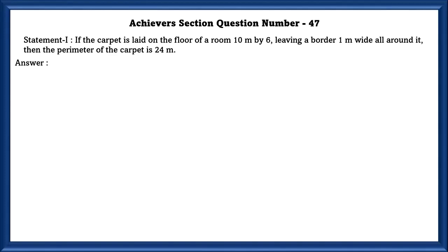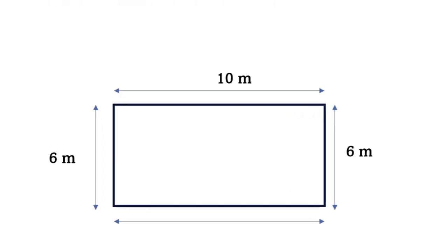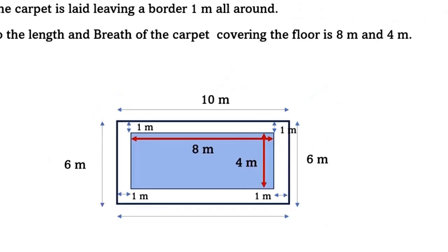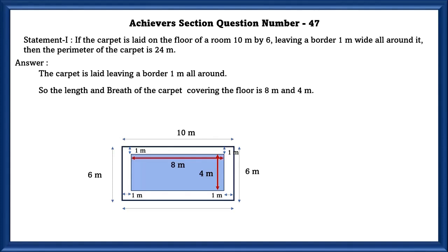Let us check if this statement is true. The carpet is laid leaving 1 meter border all around. If so, the length of the carpet would be 8 meters and the breadth would be 4 meters. So the perimeter of the carpet is equal to 2 into L plus B, that is 24 meters. So statement 1 is true.